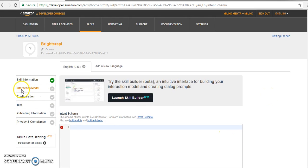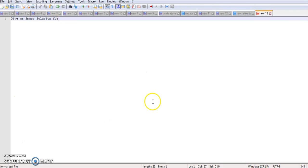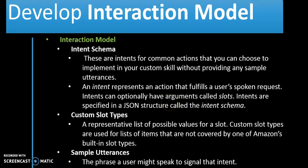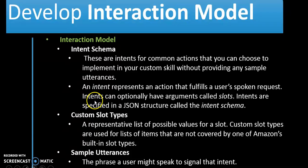We are going to learn an interaction model. What is the interaction model? The interaction model contains three things: it is the intent schema, a custom slot type, and the sample utterance. These are the intents for common actions that you can choose to implement in your custom skill without providing any sample utterance. We are also going to use the slot within the intent schema. An intent represents an action that fulfills a user's request. The intent can optionally have an argument called slots.